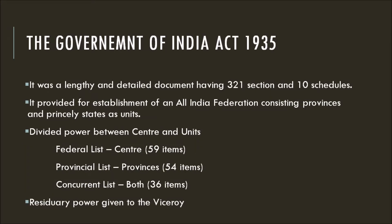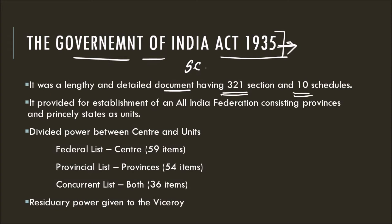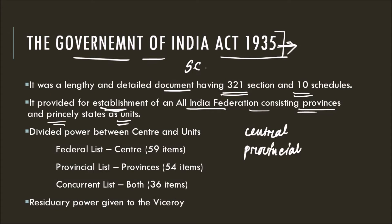Then came the Government of India Act 1935. The Act was based on the recommendations and report submitted by the Simon Commission. It was a lengthy and detailed document having 321 sections and 10 schedules. It provided for the establishment of an All India Federation consisting of provinces and princely states as units. Earlier, power was divided between the center and provinces as central and provincial subjects. Now, power was divided into three lists: the Federal List for the center, the Provincial List for provinces, and the Concurrent List for both.